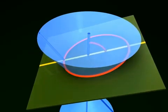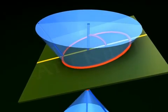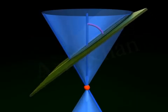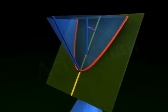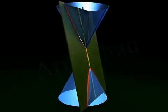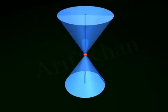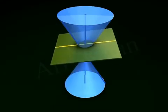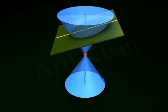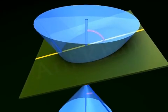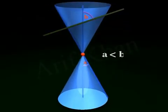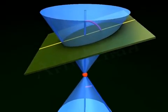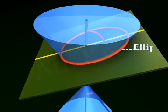Depending on the angle made by the plane with the vertical axis of the cone, the plane can cut the cone in three different ways. When the plane intersects the double right circular cone in such a way that the angle between the plane and the axis is greater than the vertex angle, we get a closed curve called an ellipse.